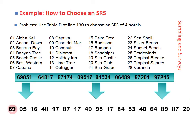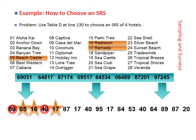Reading across, the first number we get is 69, but we've only given labels up to number 28, so 69 doesn't fit within that range. Then we get 05, which corresponds to the Beach Castle Hotel. Next we have 16 — we'll choose that one, which corresponds to the Radisson. The next number is 48; again, we only have 28 hotels, so 48 does not apply. Then we get 17, which corresponds to the Ramada.